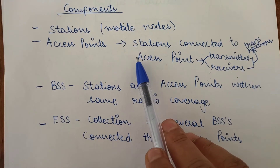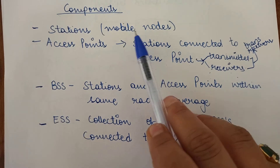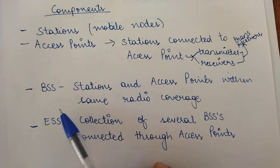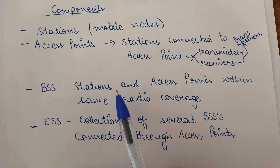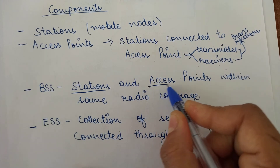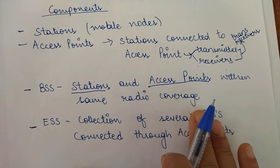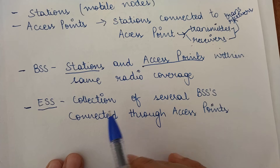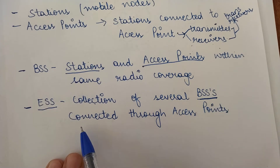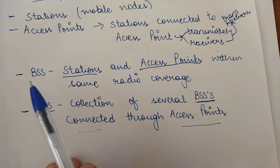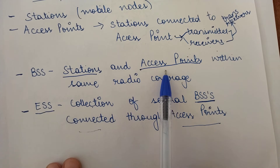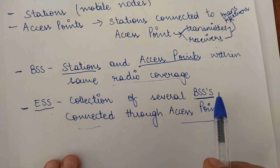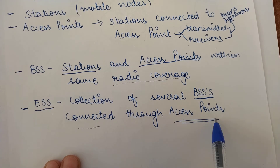All the stations, or mobile nodes, are connected to these access points. The Basic Service Set consists of all the stations and access points which are within the same radio coverage, meaning within the same range. The Extended Service Set is a collection of several Basic Service Sets connected through access points.